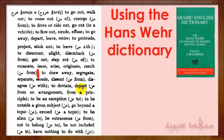عن can mean to depart from an arrangement or from a principle, to be an exception — for example, خرج عن الحكم means he made an exception to the rule. It also means to be outside a given subject, to go beyond a topic, to exceed, to be alien, to be extraneous, not to belong, not to be included, to have nothing to do with it. All these meanings share the general sense of departing or drawing away from something.